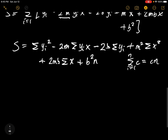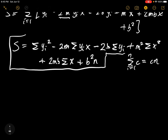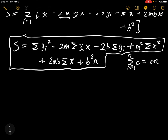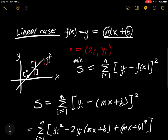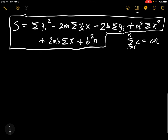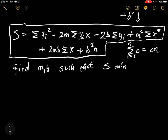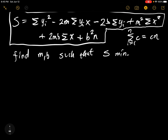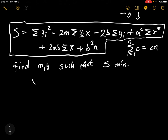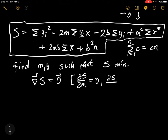Now we have our sum s representing the sum of squares of the residuals. To find values m and b such that s is a minimum, we use multivariable calculus: when s is a minimum, the gradient of s equals zero. That means the partial derivative of s with respect to m is zero, and the partial derivative of s with respect to b is zero.